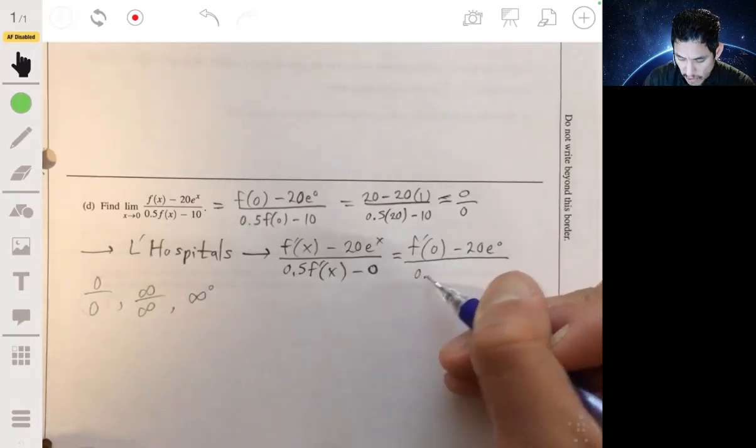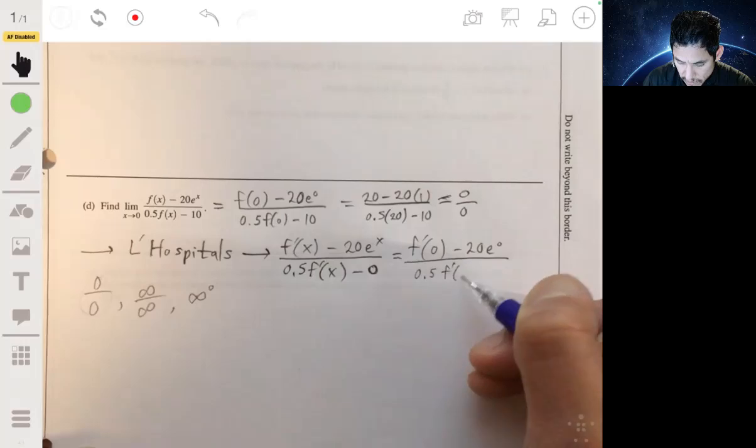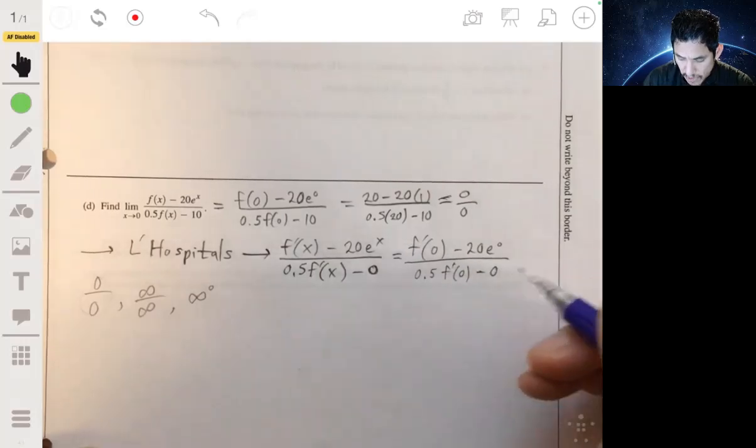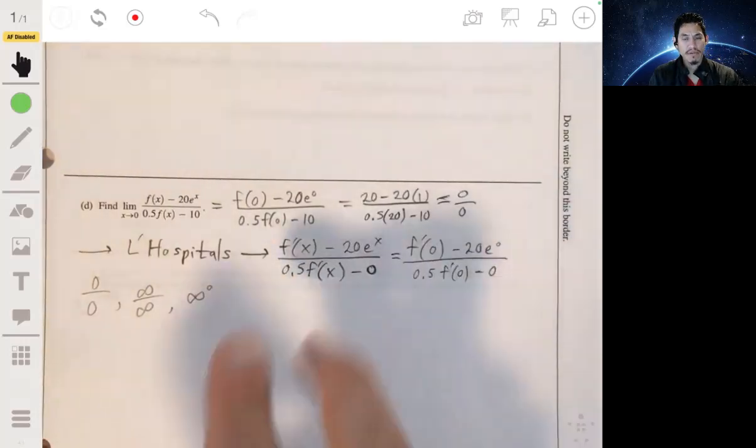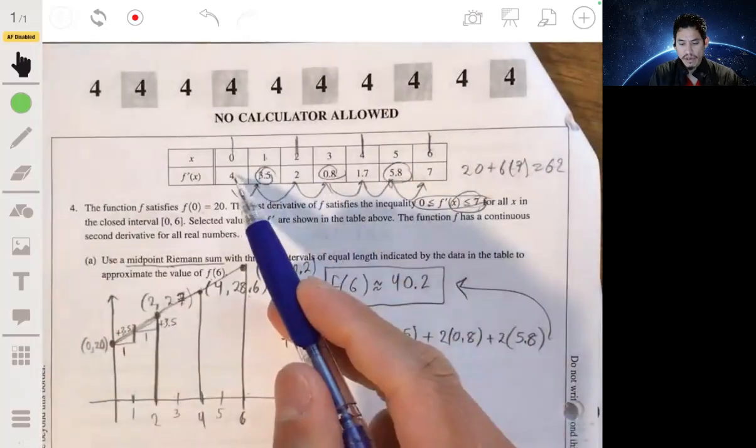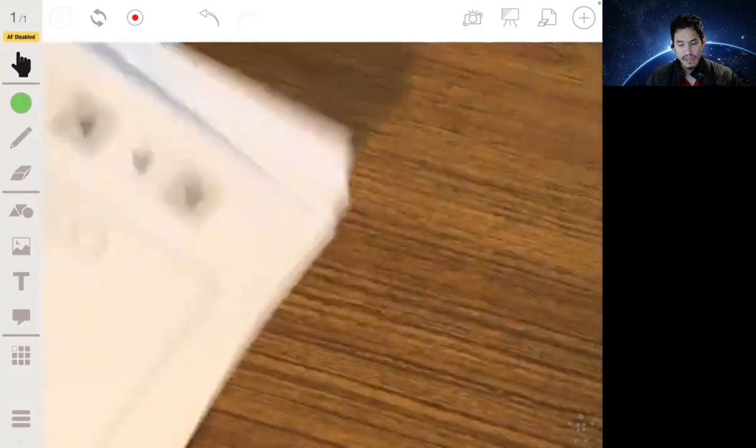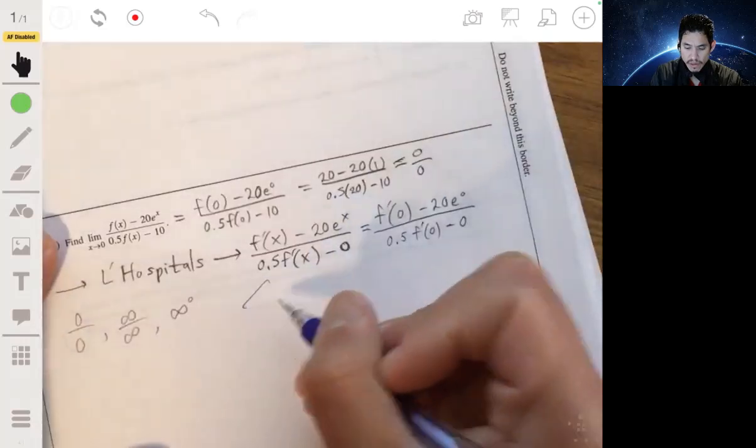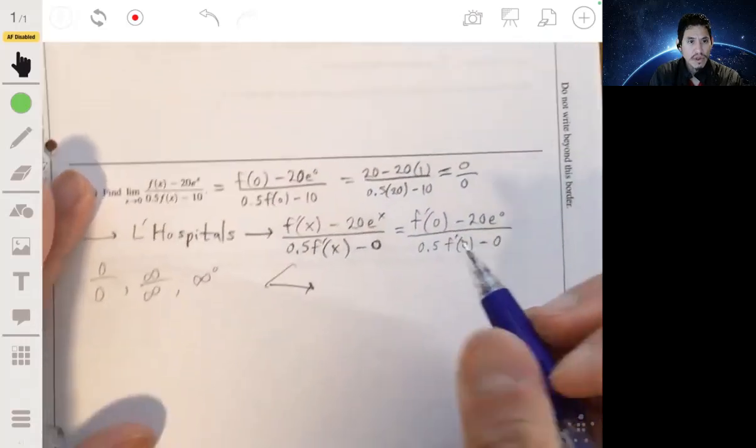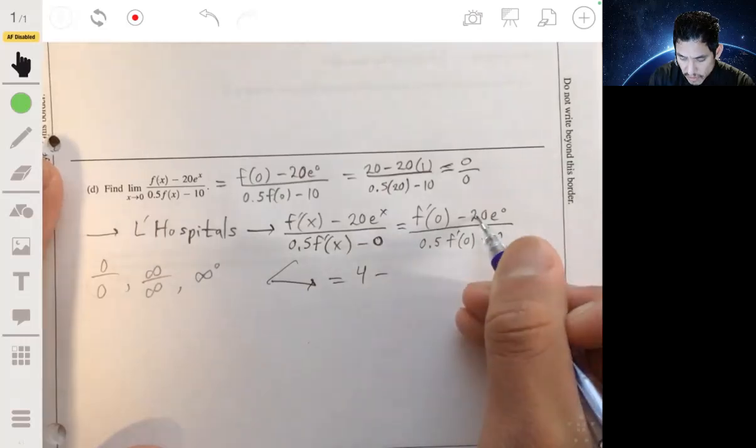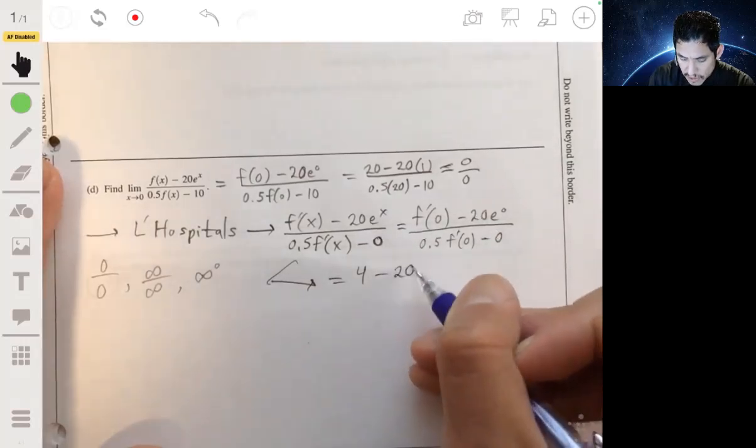f prime of 0 looking at our table we can see it's 4. So we get this equal to 4 minus 20 times 1, so just minus 20.